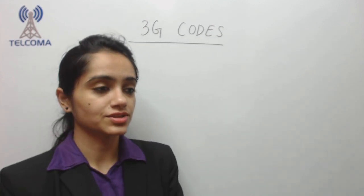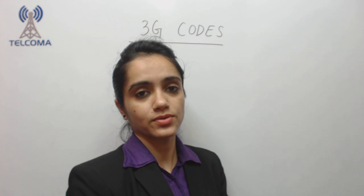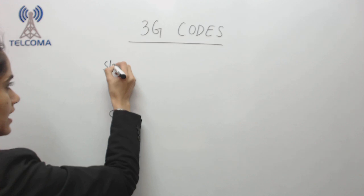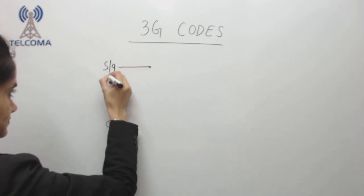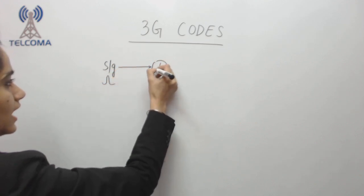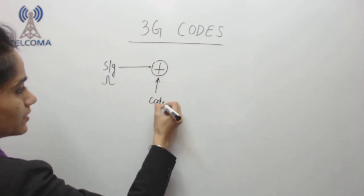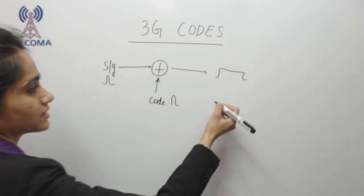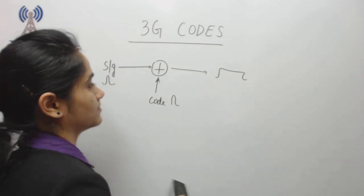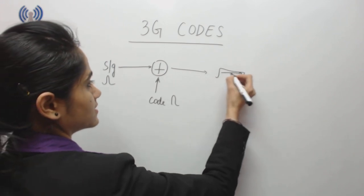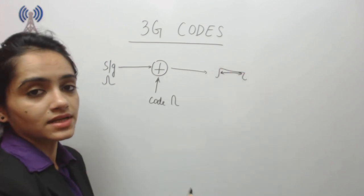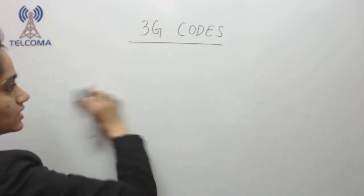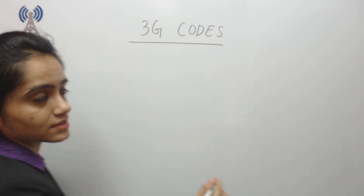Hello and welcome to the class on 3G codes. Today we are going to discuss codes which are used in 3G. If I have a signal, I'm going to add the signal with some code and the resultant will be a spread signal, because we are working on a spreading technique — WCDMA concept. It will be spread, and at the receiver end the code will be removed and I will have the original signal.